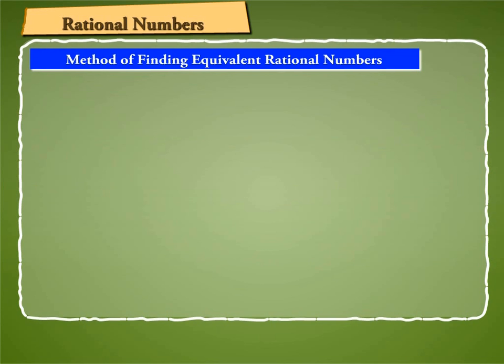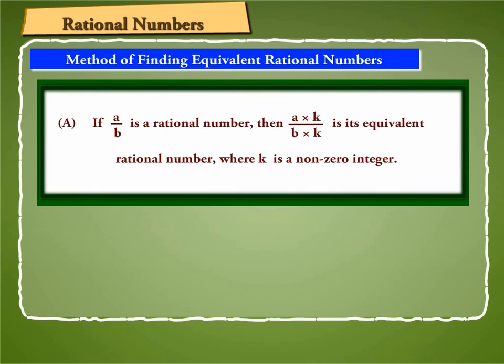Now find out method of finding equivalent rational numbers. A. If A by B is a rational number, then A into K by B into K is its equivalent rational number, where K is a non-zero integer.